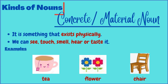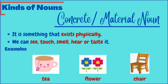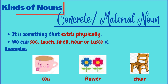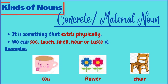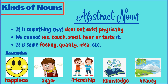Next, let's talk about the concrete or material noun. A concrete or material noun is one that exists physically and is real — we can sense it through any of the five senses, namely sight, hearing, smell, taste, or touch. Examples include tea, flower, and chair. You can see that all these things exist physically and can be perceived through the five senses.